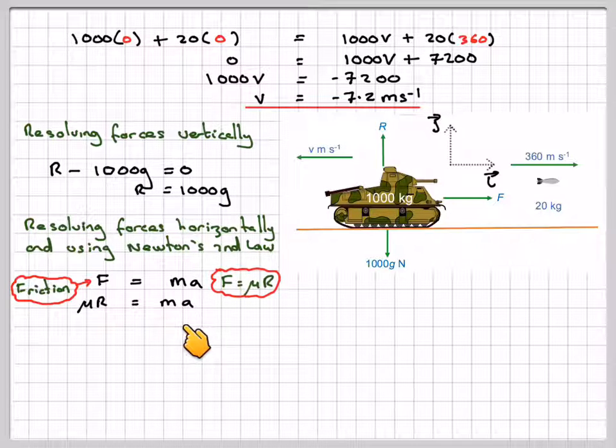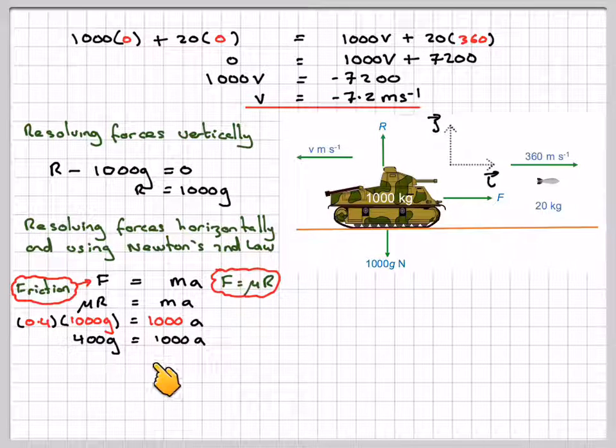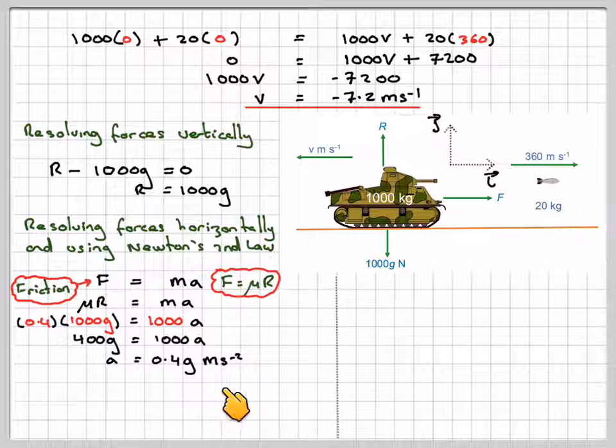We're going to have μR equals MA. μ is 0.4, R is 1,000g, equals 1,000 times the acceleration. Therefore, 400G equals 1,000A, therefore A equals 0.4G meters per second squared, the acceleration of the tank.